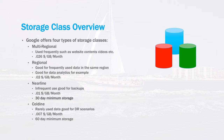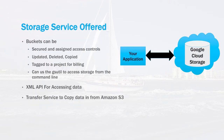Last is the coldline storage class, good for data that's rarely used at all — a common use case might be disaster recovery. It is by far the cheapest option at $0.007 per gigabyte per month and has a 60-day minimum storage requirement. In addition, if you look on the Google website there's a decision tree that takes you through a question-and-answer process to help determine the best storage class for your particular application.